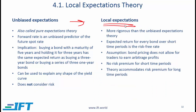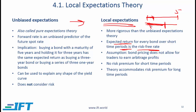That brings us to the local expectations theory, which is a more rigorous version of the unbiased expectations theory. Here, the expected return for every bond over short time periods is the risk-free rate. In other words, whether you buy a 5-year bond or a 3-year bond, the expected return in the short term is the same and it is the risk-free rate. The underlying assumption is that bond pricing does not allow for traders to earn arbitrage profits, so all bonds regardless of maturity should give the same return for short holding periods.